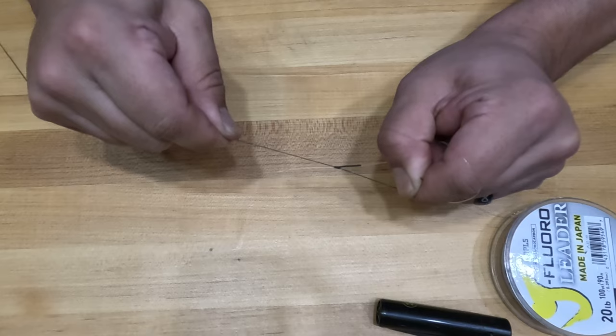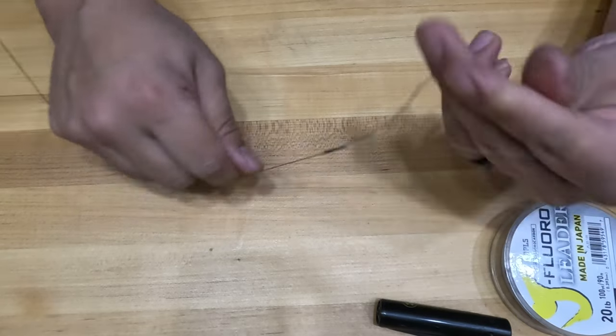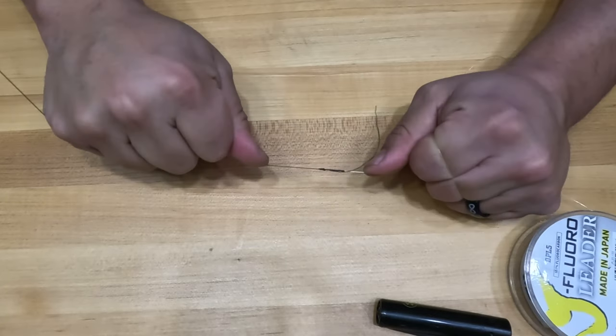Now that the knot is tied, it's safe to pull on all of the lines that you can see, making sure to pull the opposite tag ends as well as your opposing main lines.